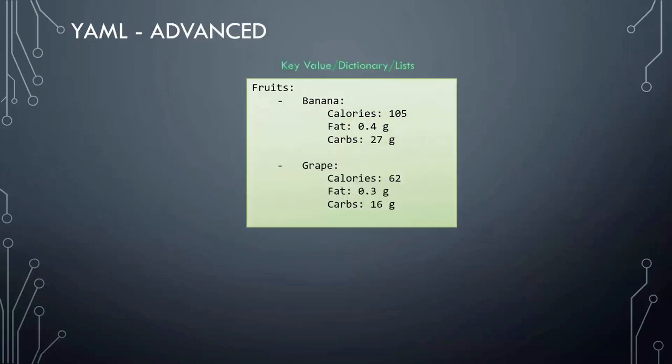Let's take it to another level. You can have lists containing dictionaries containing lists. In this case, I have a list of fruits and the elements of the list are banana and grape. But each of these elements are further dictionaries containing nutrition information.